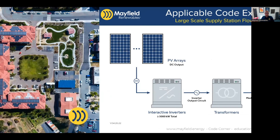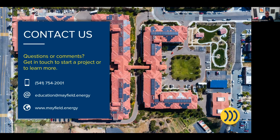That's pretty much Article 691. It's a quick overview of a short article, but it's good to know some of those key highlights, especially if you're working on large systems. We do these Code Corners on various topics, so if you have questions or comments, feel free to reach out. If you have project-specific questions or design and engineering needs, we'd love to chat and see if there's a way we could help. Thanks, and we'll talk to you next time.